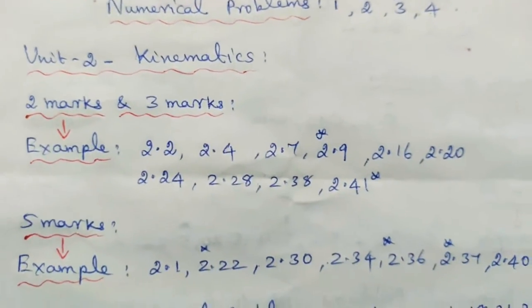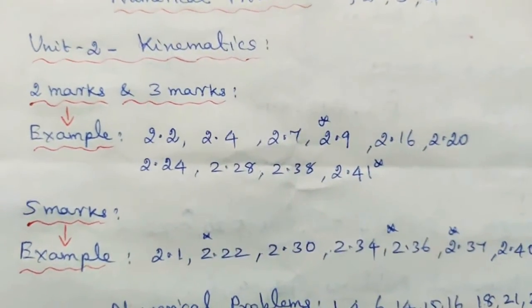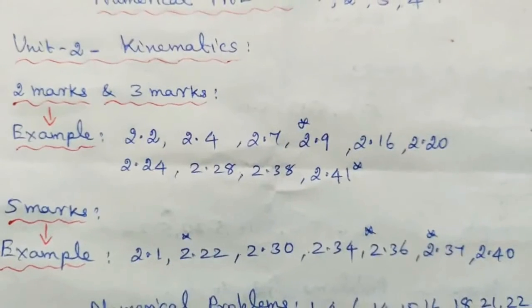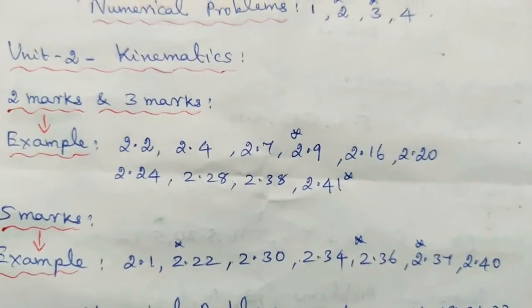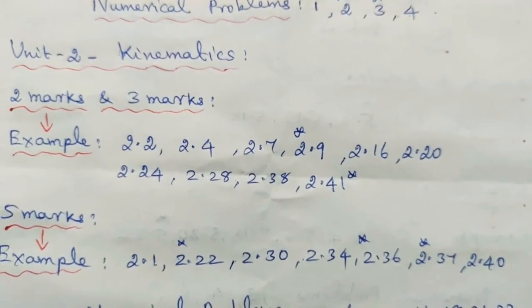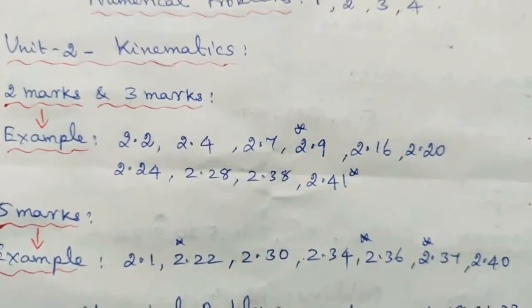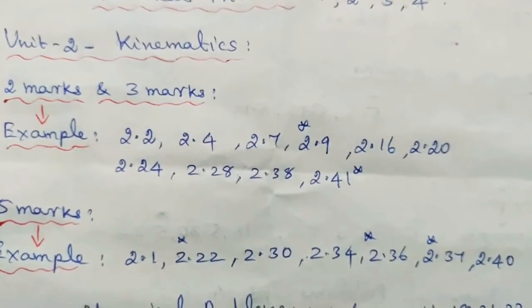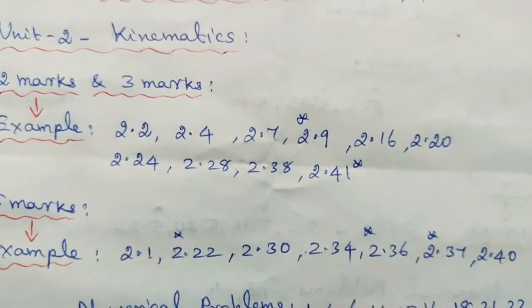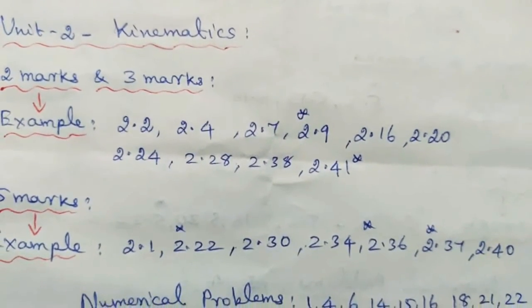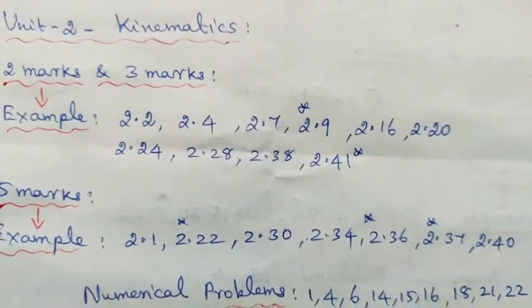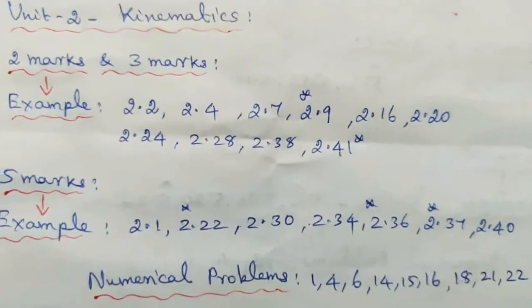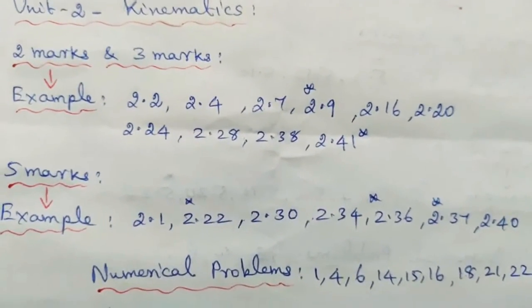5 marks example problems: 2.1, 2.22, 2.30, 2.34, 2.36, 2.37, and 2.40. Bookback.